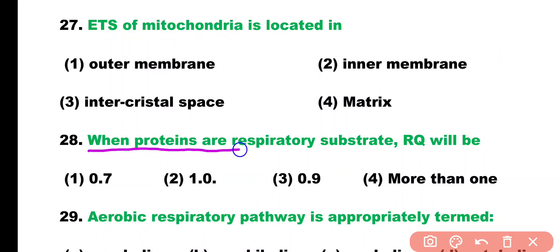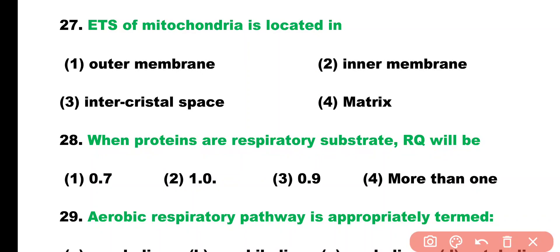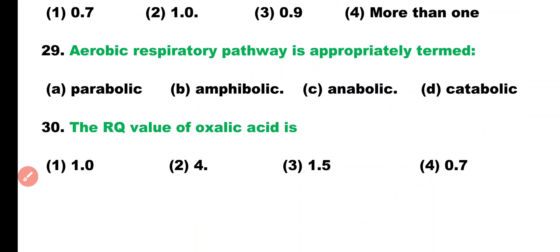Question number 28. When proteins are a respiratory substrate, the respiratory quotient will be: 0.7, 1.0 or 0.9, or more than 1. Correct answer is option 3. The respiratory quotient of protein is 0.9.